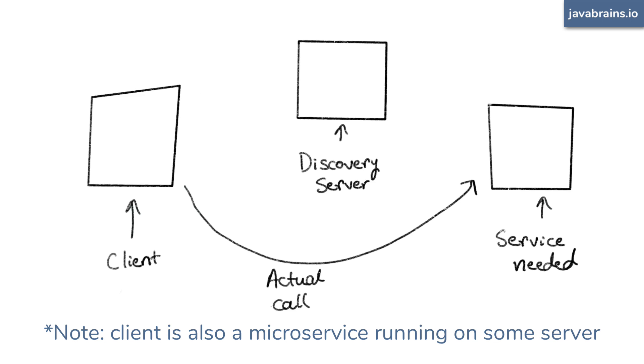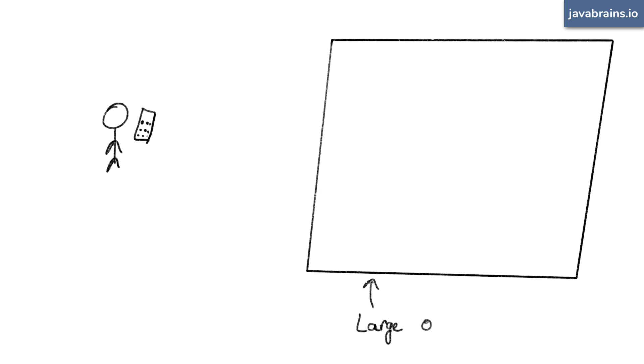The disadvantage should be obvious. The client has to make two calls, one to the service registry and one to the actual service. Now, let's look at a second model of service discovery. Let's take a different scenario. This time, you're not calling to order pizza. Let's say you're trying to reach someone who works in a large office. You don't know their extension, so you call the reception desk. The receptionist picks up and asks you the name of the person you're trying to reach. You tell the name, and the receptionist looks up the extension number and transfers your call directly to that person.